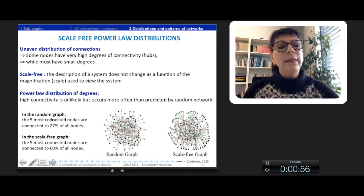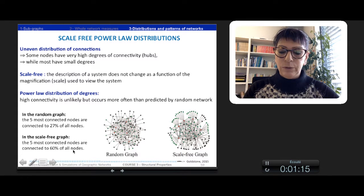For example, in the random graph, the five most connected nodes are connected to 27% of all nodes. In the scale-free graph, the five most connected nodes are connected to 60% of all nodes.